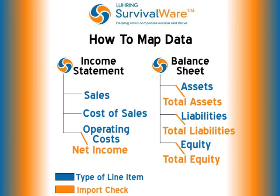Now I'll take you to the How to Map Data Map, which illustrates conceptually the mapping data process. You'll notice that Income Statement and Balance Sheet have been separated and then additionally categorized, so that we see the Type of line items in blue and Import Checks in orange.